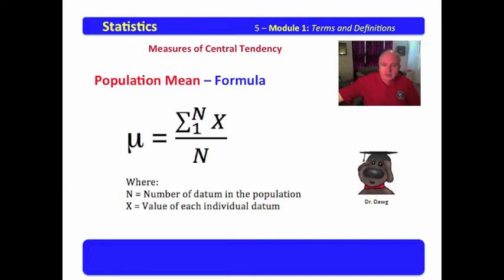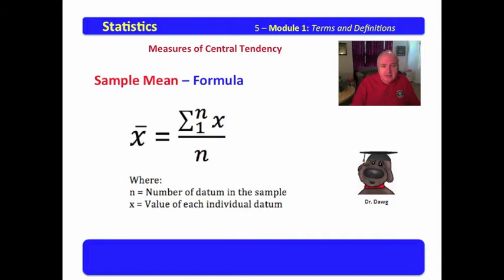where N is the number of datum in the population, and X is equal to the value of each individual datum. You will notice in this that for the population, we use a capital N to stand for the number in the population, and we use a capital X to stand for the individual values. μ is equal to the sum of all X from one to N, divided by N.